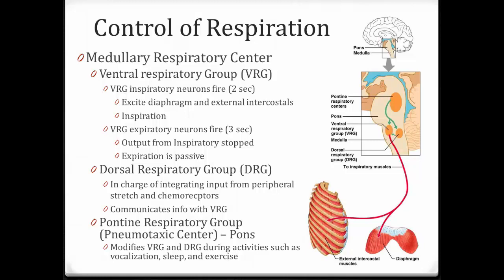In the ventral respiratory group, there are inspiratory neurons and expiratory neurons. The inspiratory neurons fire for about two seconds, causing the diaphragm and external intercostals to contract, producing inspiration. Then the expiratory neurons fire for about three seconds and they inhibit the inspiratory neurons, stopping them from firing.